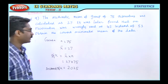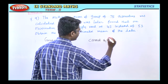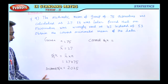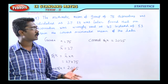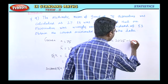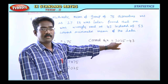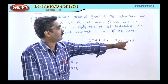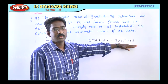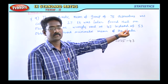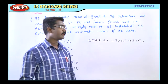Now we are going to find the correct sigma x. The correct sigma x equals 2025 minus 43 plus 53, which gives us 2035. That is the correct summation of observations.